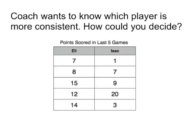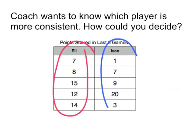Coach wants to know which player is more consistent. How could you decide? Well, we've got two players. We've got Eli, and we've got Isaac. And what we can do is find the range of their scores.